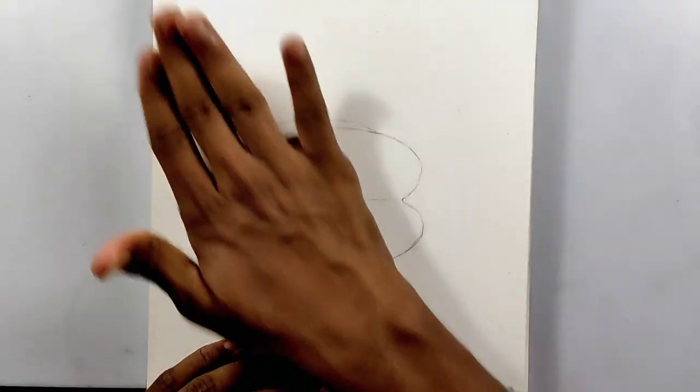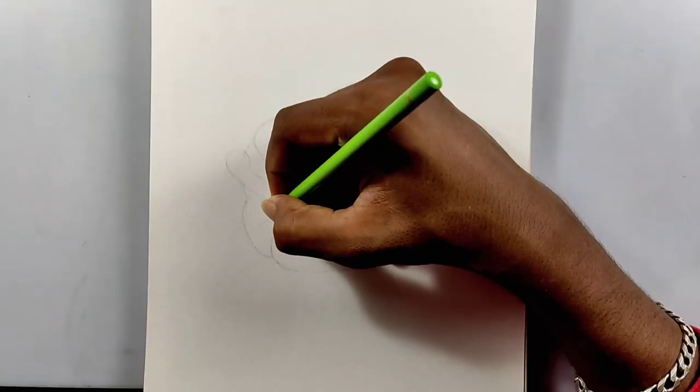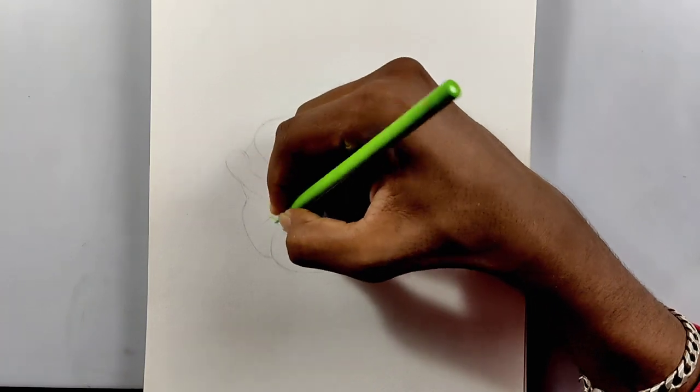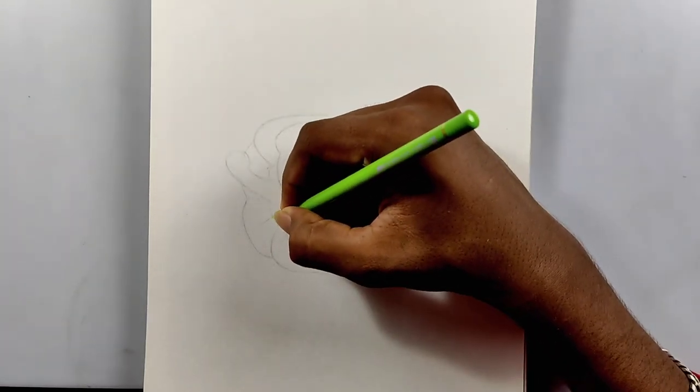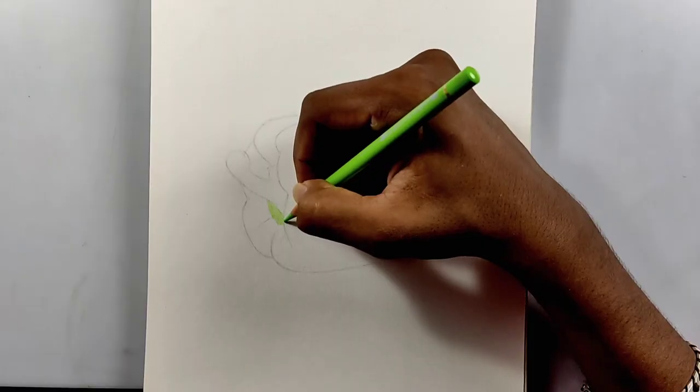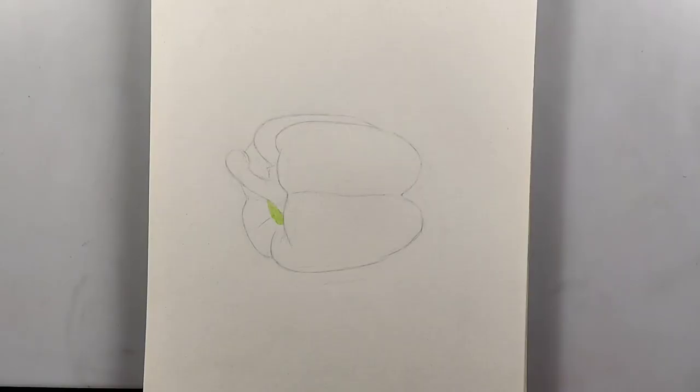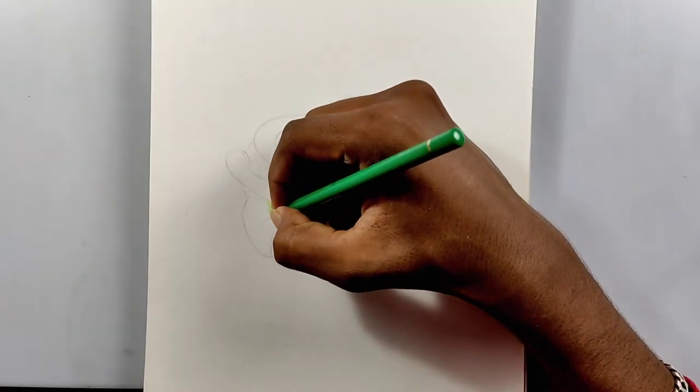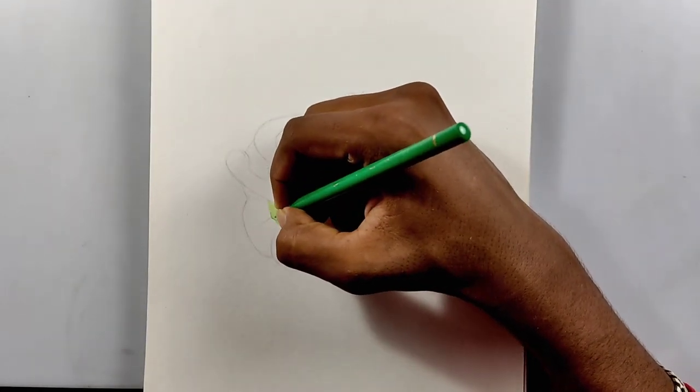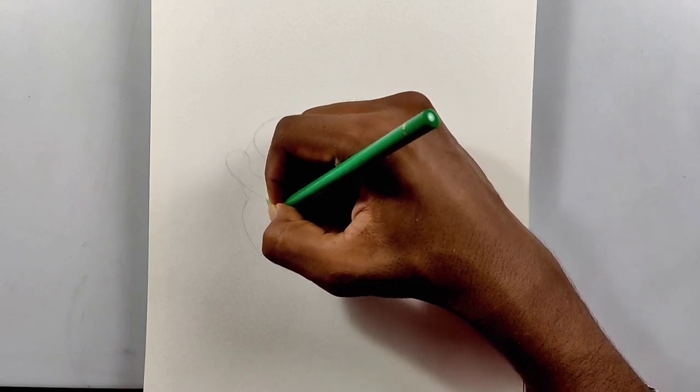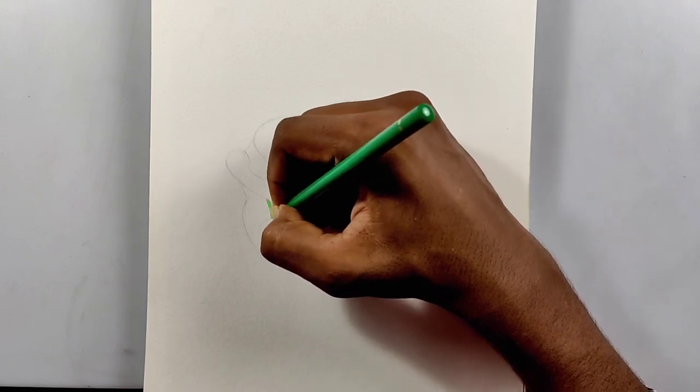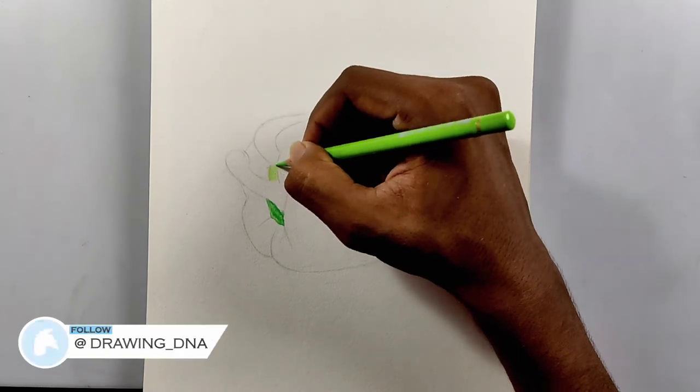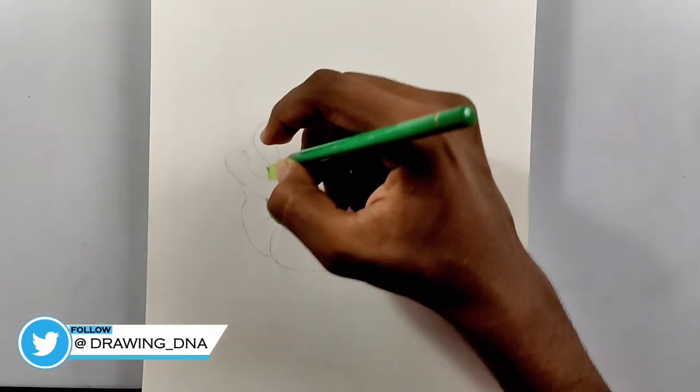Here you can see me using a kneaded eraser to lighten it up so we can work on colors. First of all, pick your light green pencil and fill the whole space. Let's start with the stem. Other than the highlighted areas, just fill it up, then pick your darker green and just add your details. Later we can add the shadows by using the black pencil.